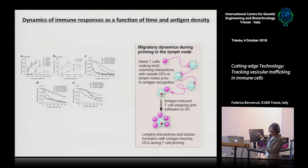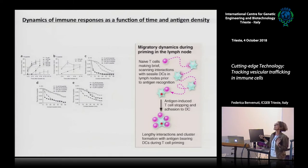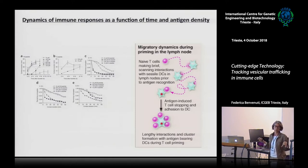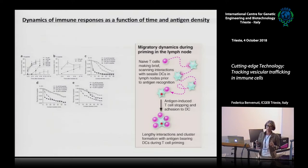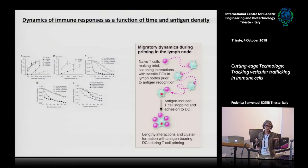People came up with a model: naive cells that haven't seen any antigen come in and begin to patrol the environment of the lymph node. Once they have accumulated sufficient signals, they stop on the antigen-presenting cell and begin to proliferate. But people really didn't know how proliferation occurs — the first studies were mostly focused on understanding the initial phases of encounter and stopping on the antigen-presenting cells.